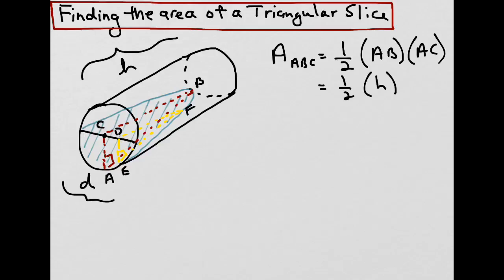And we know that AC is going to be equal to the radius of the base. So we can write this as R, as the distance here being the radius. So we can substitute AC with R.